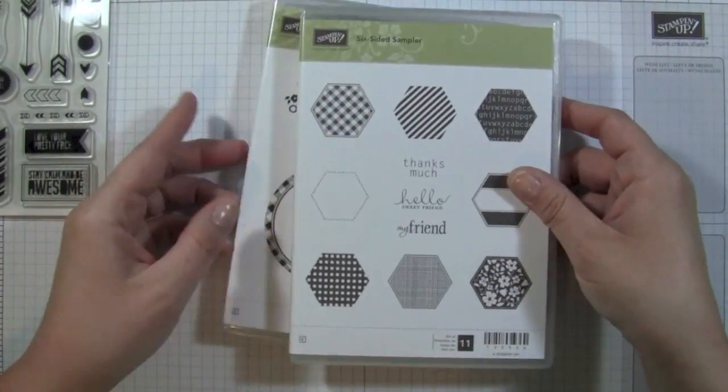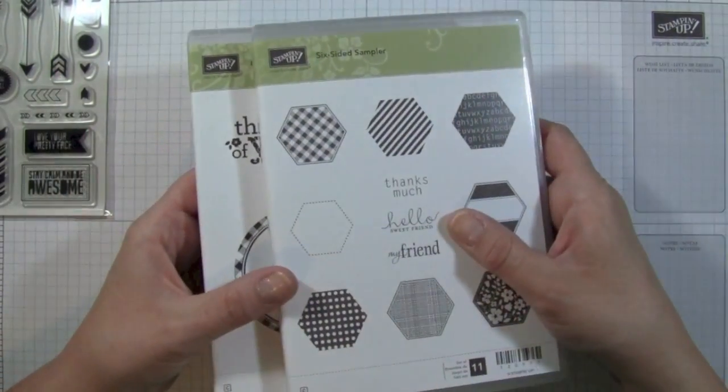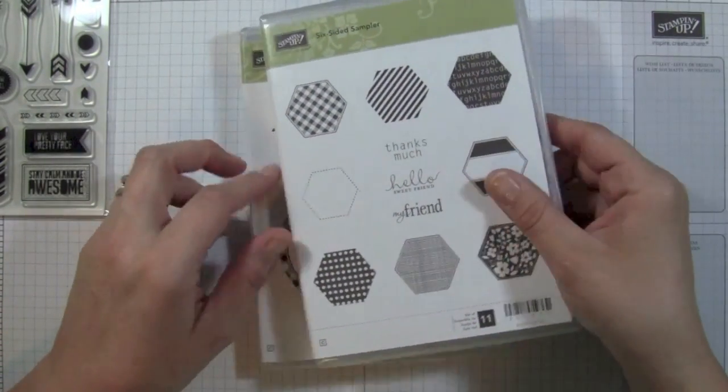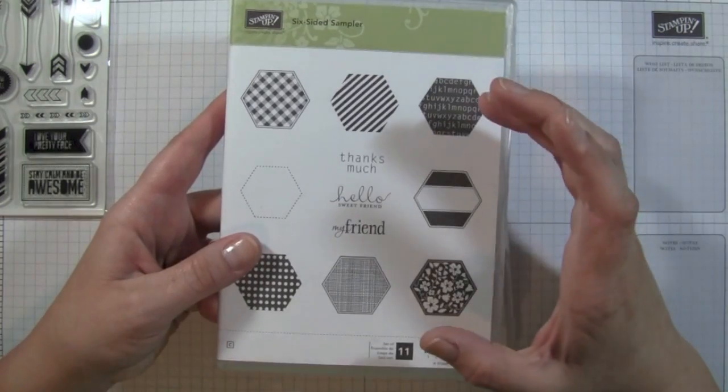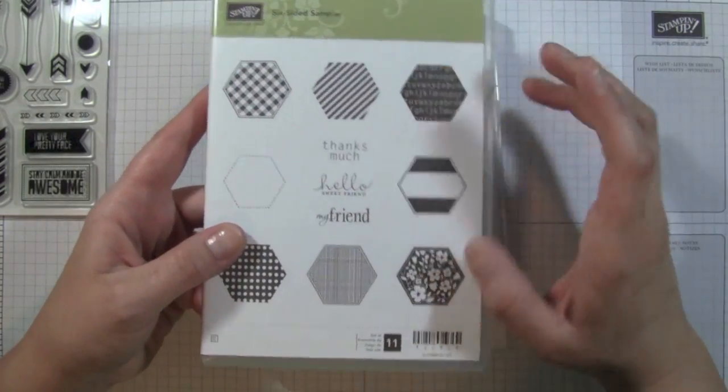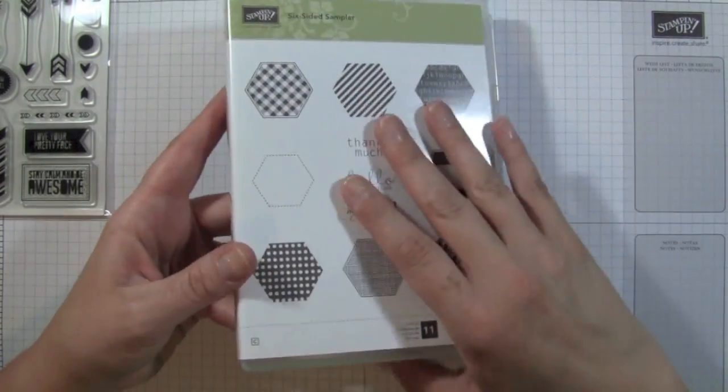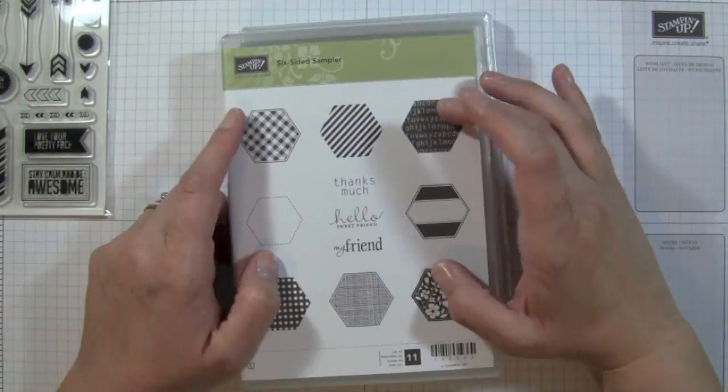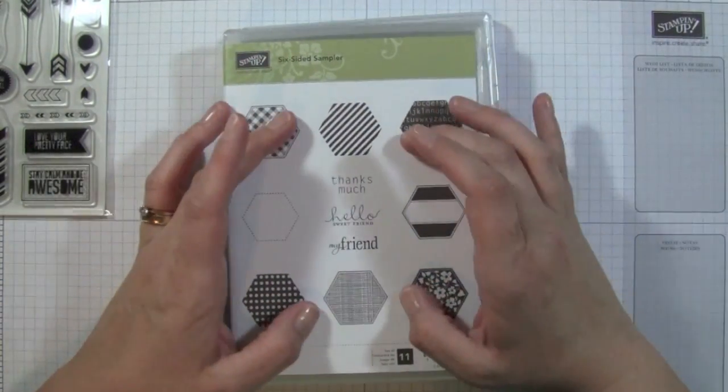Then they have their cling mount, or in the catalog they call them clear, and then they also have the wood mount stamps. Now, the wood and cling mount stamps, they are exactly the same except for that the wood mount comes with the blocks that you can actually mount your rubber stamps onto the wood mount block and then put your sticker on the top.